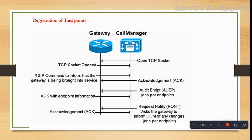Once the Call Manager acknowledges the RSIP, it will send an Audit Endpoint message — one per endpoint — to the voice gateway. The voice gateway must then acknowledge it for that endpoint. After this successful exchange, the endpoint gets registered.